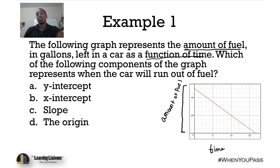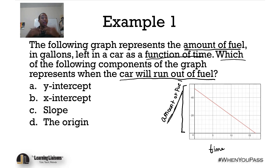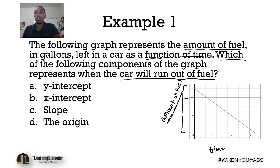We can apply some common sense here. When the car runs out of fuel, how much fuel is left? Zero. So if we're looking at the Y axis — 40 gallons, 20 gallons, zero gallons — zero gallons is where our car will run out of fuel.